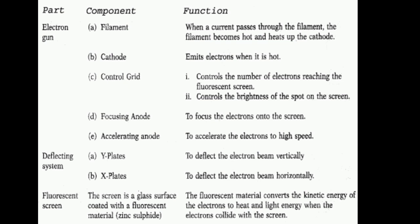Further, we have component functions. The filament: when a current passes through the filament, it becomes hot and heats up the cathode. The cathode emits electrons when it is hot. The control grid controls the number of electrons reaching the fluorescent screen. The focusing anode focuses the electrons onto the screen. The accelerating anode accelerates the electrons to high speed. Y-plates deflect the electron beam vertically, and X-plates deflect the electron beam horizontally.